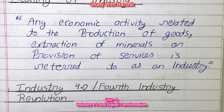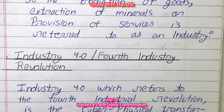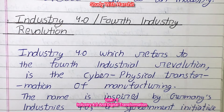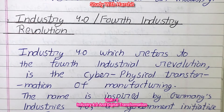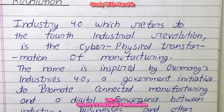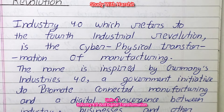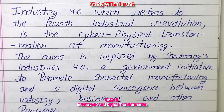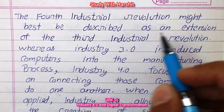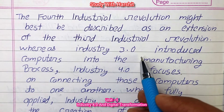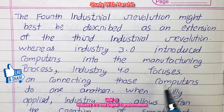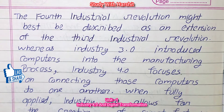Industry 4.0, or the 4th Industrial Revolution, refers to the cyber-physical transformation of manufacturing. The name is inspired by Germany's Industry 4.0, a government initiative to promote connected manufacturing and digital convergence between industry, businesses and other processes. The 4th Industrial Revolution might best be described as an extension of the 3rd, whereas Industry 3.0 introduced computers into manufacturing, Industry 4.0 focuses on connecting those computers to one another.